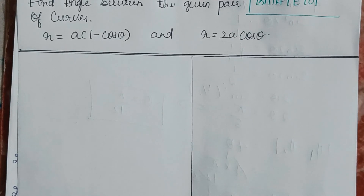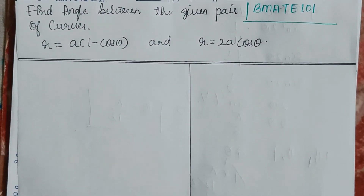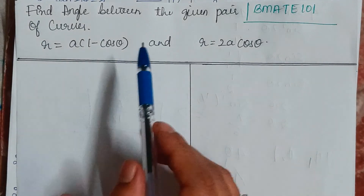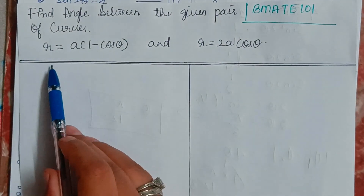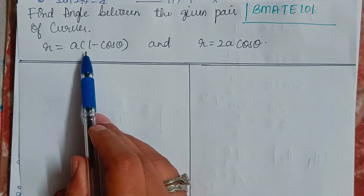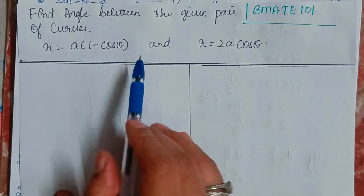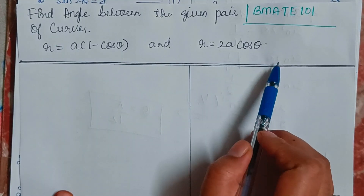Hello everyone, welcome back to my YouTube channel Learn with Sumi. In this video, we are going to find the angle between the given pair of curves: R equals A into 1 minus cos theta, and R equals 2A cos theta.